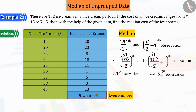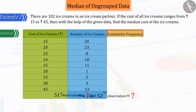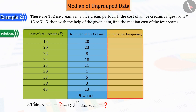But here, we do not know the value of both these observations. So, can you tell what we need to do to know the values of these observations? For this, let's create a new column. In the first line, let's group the ice creams that are priced up to 15 rupees.